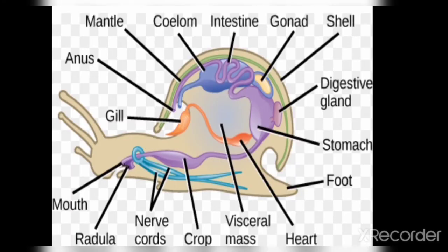Regarding reproduction, sexes are separate — males and females are distinct. As a result of fertilization, either a direct organism develops or a larva is formed. The larva can be referred to as a veliger larva or a trochophore larva. The snail diagram we have been examining can be used to explain the entire phylum Mollusca.